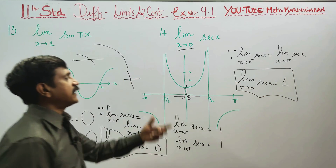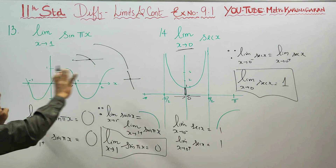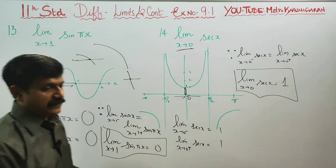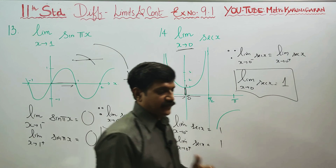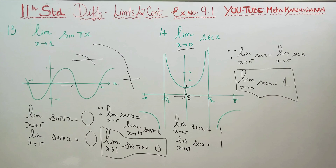We are totally finding the answers from the graph. If you have a graph, you will have an interpretation of the left side and right side. The limits and values are equal. If the left and right limits are not equal, the limit does not exist.